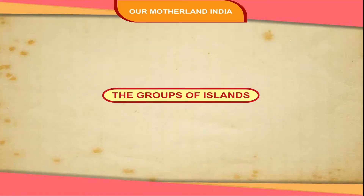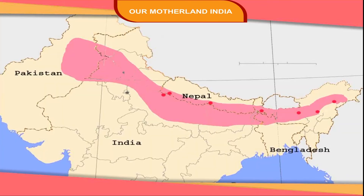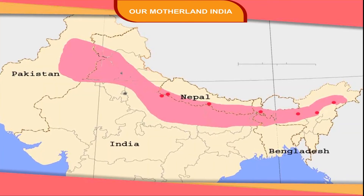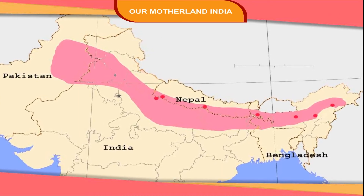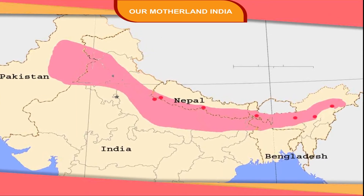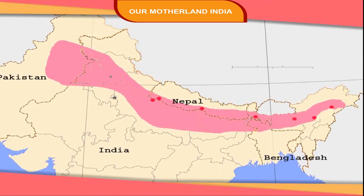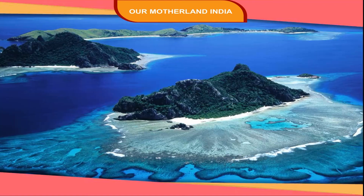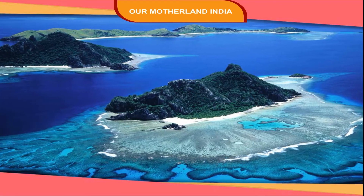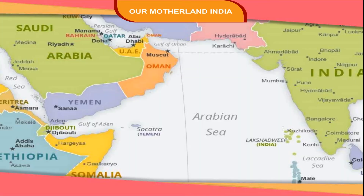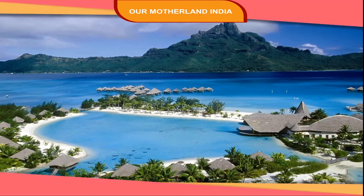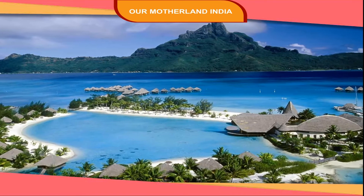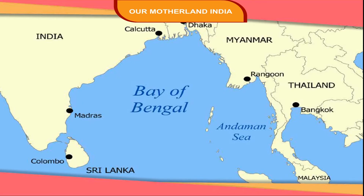The Groups of Islands. There are two groups of islands in the Indian Ocean, which can be known as the sixth natural region of India. The Lakshadweep Islands are in the Arabian Sea and the Andaman and Nicobar Islands lie in the Bay of Bengal.